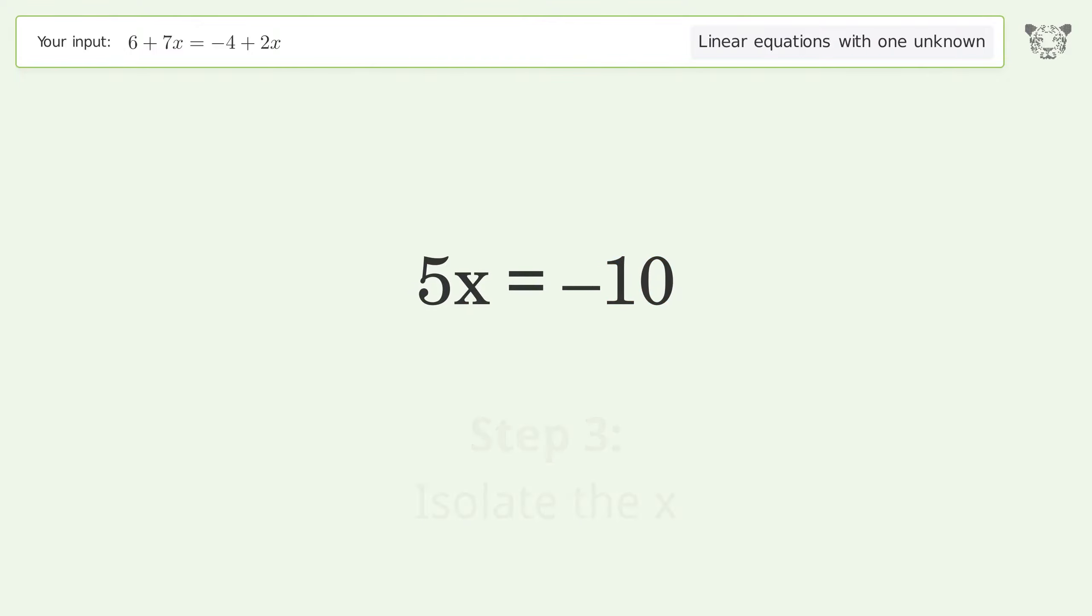Isolate the x. Divide both sides by 5. Simplify the fraction.